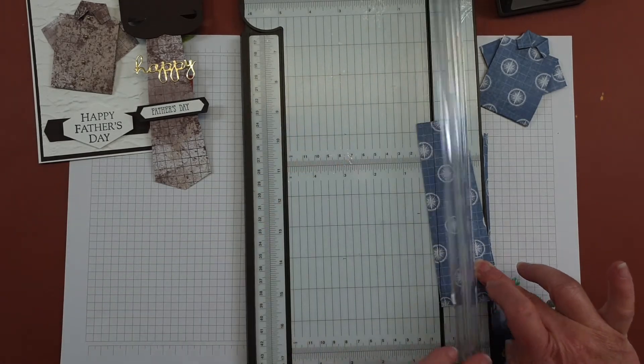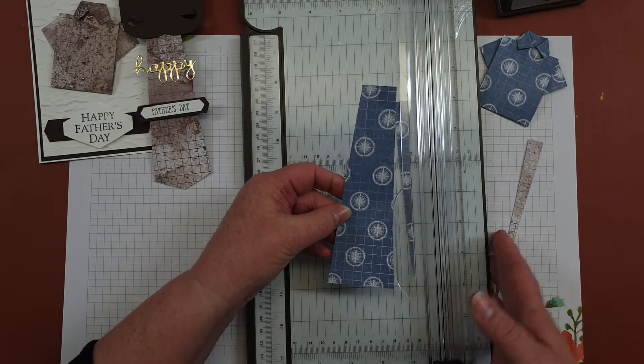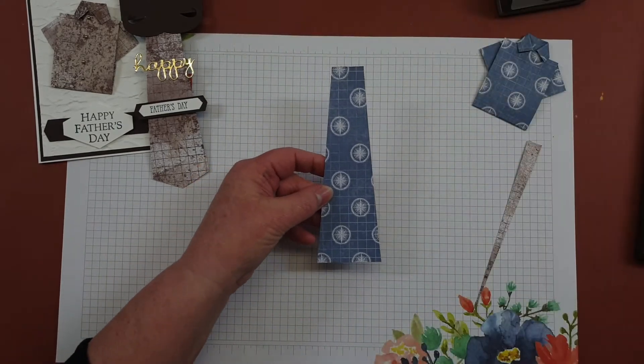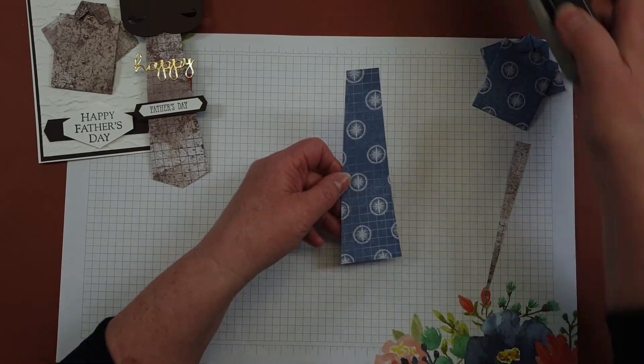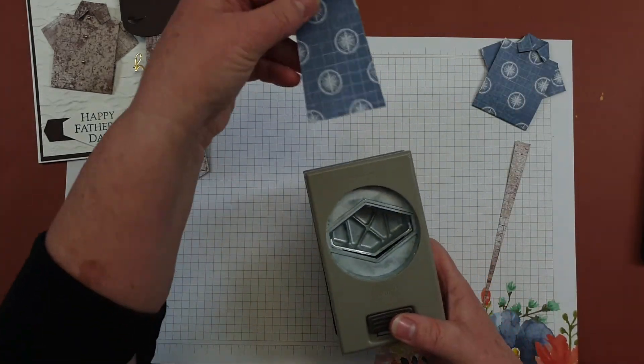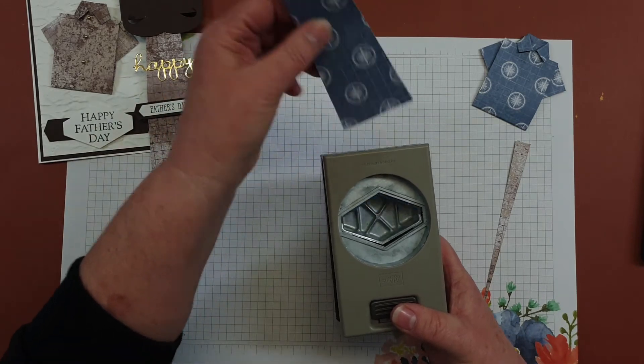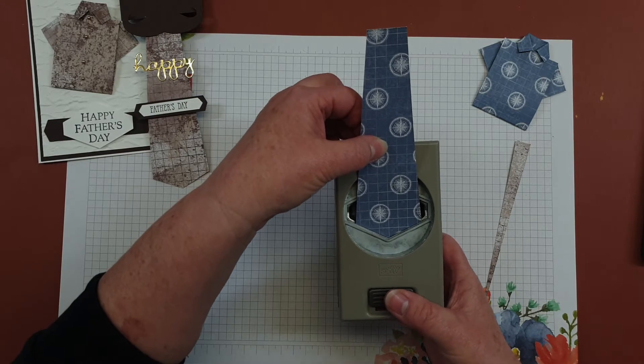So we're forming what the tie will look like. We've got this shape now. To get the bottom of the tie, I've taken the tailored tag punch. Instead of usually when you go to punch from the top, we're just going to slip it in the middle bit there and take the bottom off, and that gives you the tie.